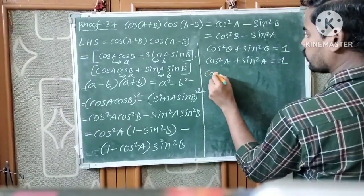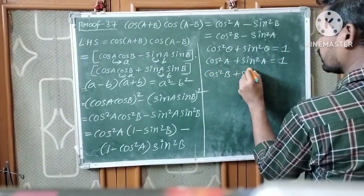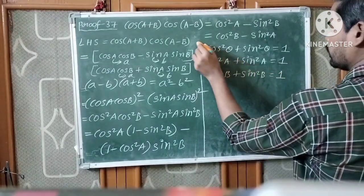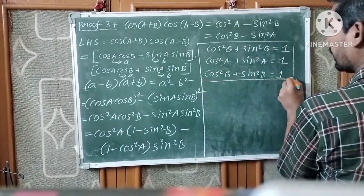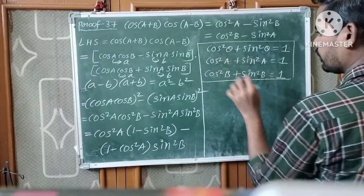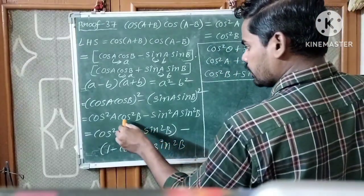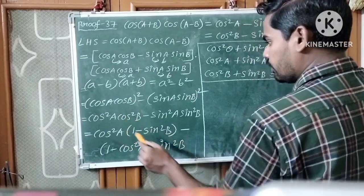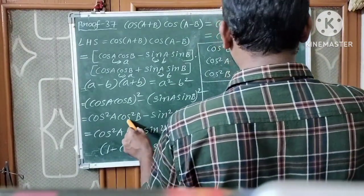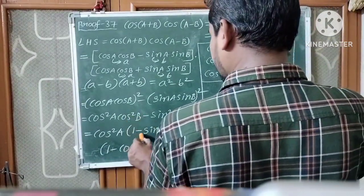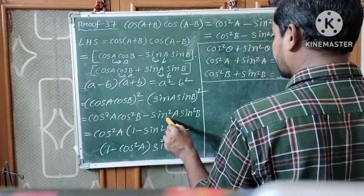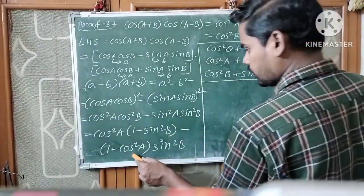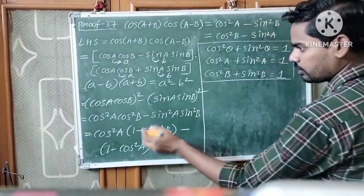Similarly, cos²A + sin²A = 1, and cos²B + sin²B = 1 — just replace θ by A or B. So in place of cos²B we write 1 minus sin²B, and in place of sin²A we write 1 minus cos²A.